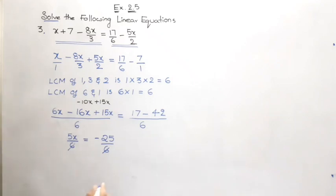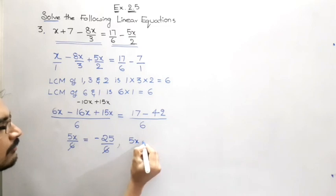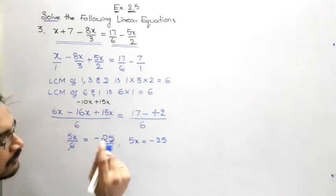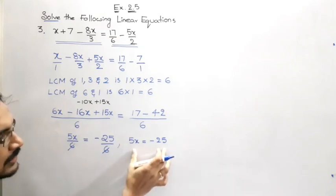And the leftover term is going to be 5x is equal to minus 25. The leftover term is 5x is equal to minus 25.